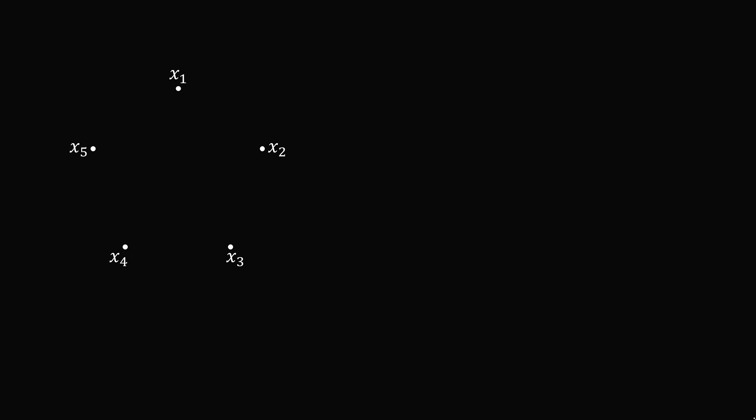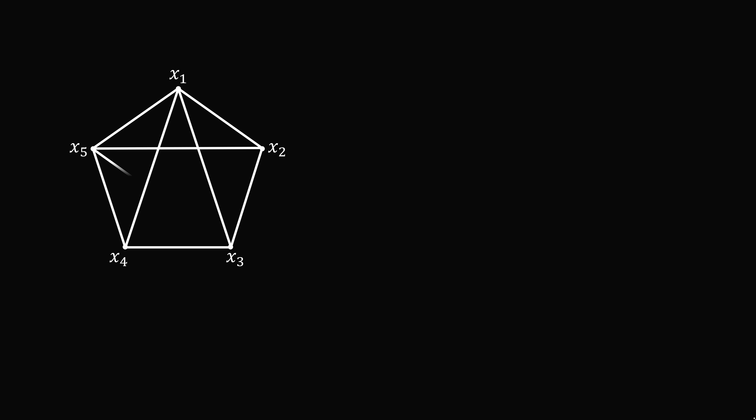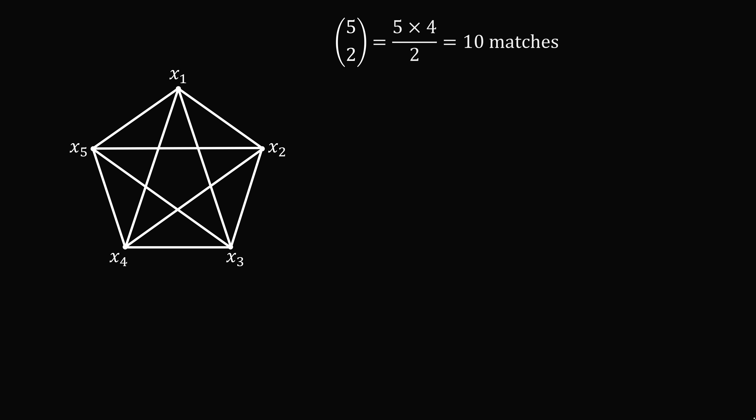There are five players, which we will represent by five different nodes, x1 to x5. We can represent a match between two of the players by connecting the nodes with an edge. So this will be a match between players 1 and 2. The total number of matches will be the total number of edges we can draw between five different nodes. We can see that it will be equal to 5 choose 2, which is 5 times 4 over 2, equal to 10. So there are 10 matches played.